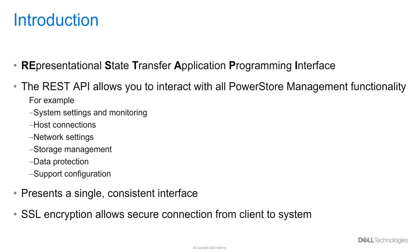Some examples where REST API can be used are System Settings and Monitoring — for instance, checking or changing the cluster name, or fetching alerts and metrics from a cluster. For host connections, we can use REST API to configure host Fibre Channel WWNs or iSCSI initiators while mapping volumes to hosts. Network settings including NTP and DNS server settings. Probably the most used are storage management capabilities to configure volumes and volume groups. We can use REST API to configure local and remote data protection features like snapshots, sync clones, and remote replication. And as a last example, it's possible to configure support settings like SSH access and support assist for remote health and CloudIQ connectivity.